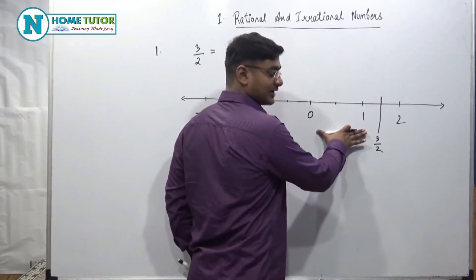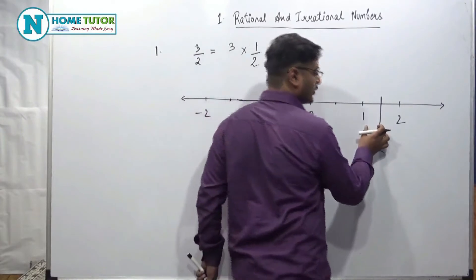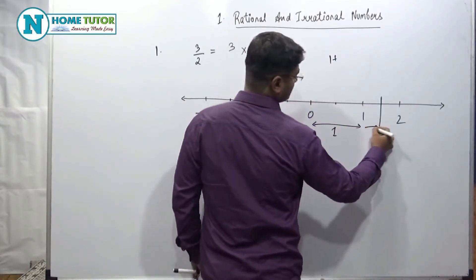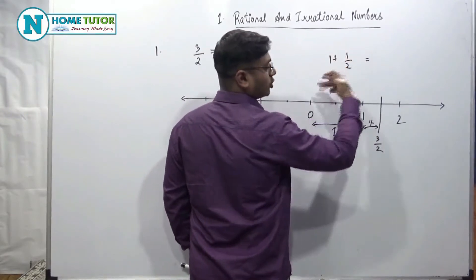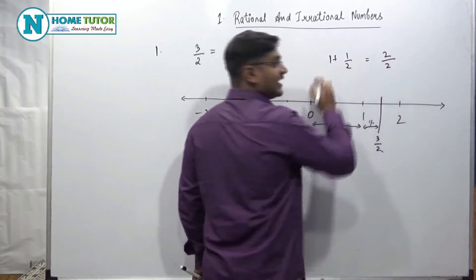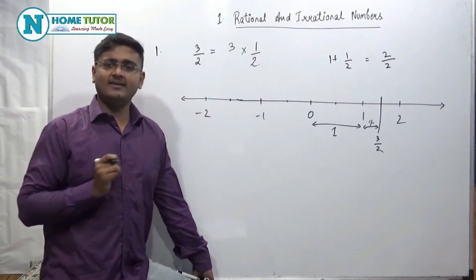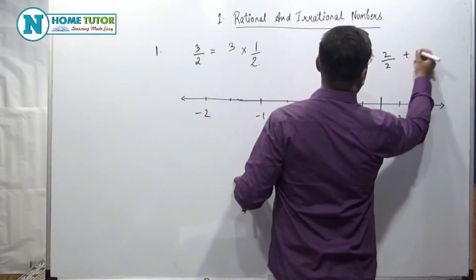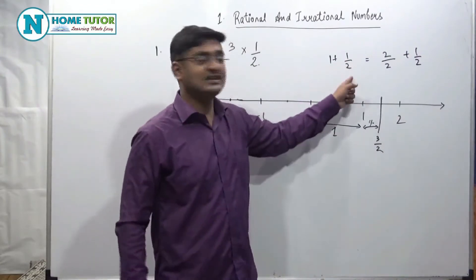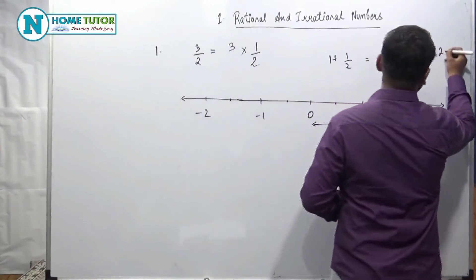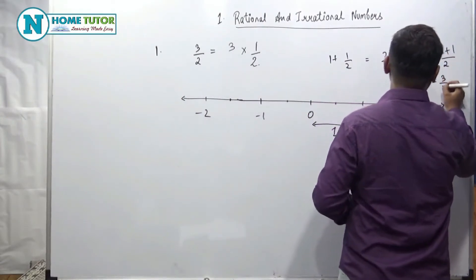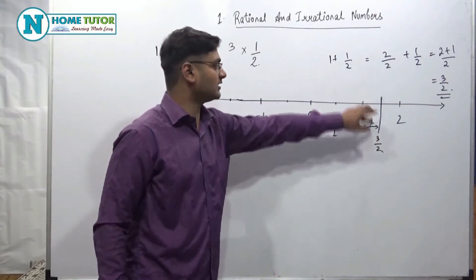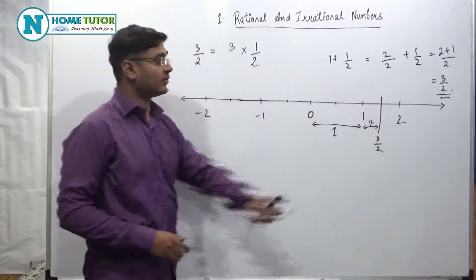This is 1, and here we have 1 by 2. So 1 plus 1 by 2. Now, multiply 1 by 2 over 2 to get 2 by 2, so that the denominators are the same. That gives us 2 plus 1, divided by 2, which is equal to 3 by 2. So 3 by 2 is confirmed as the right value.